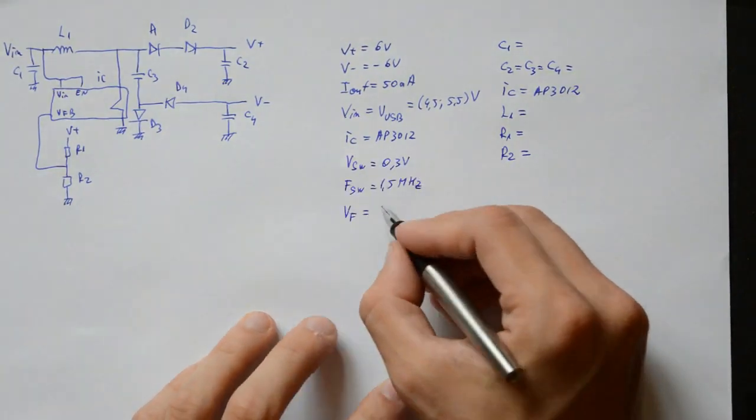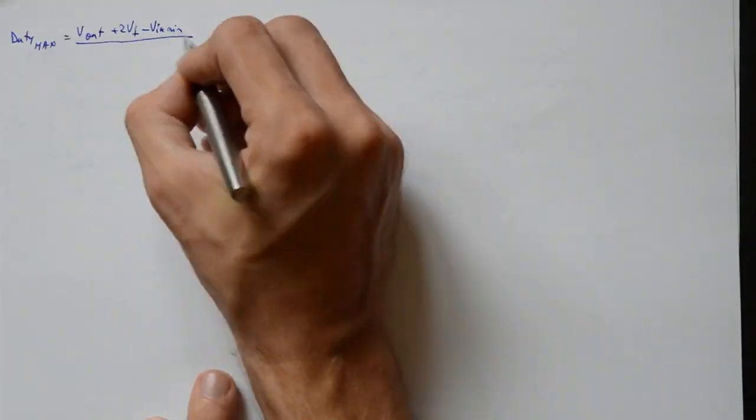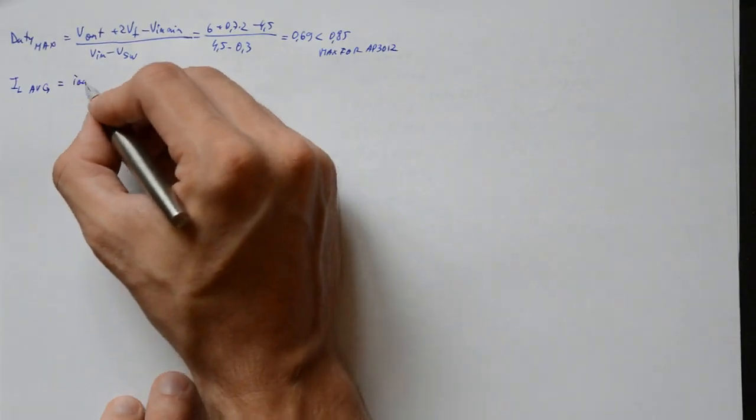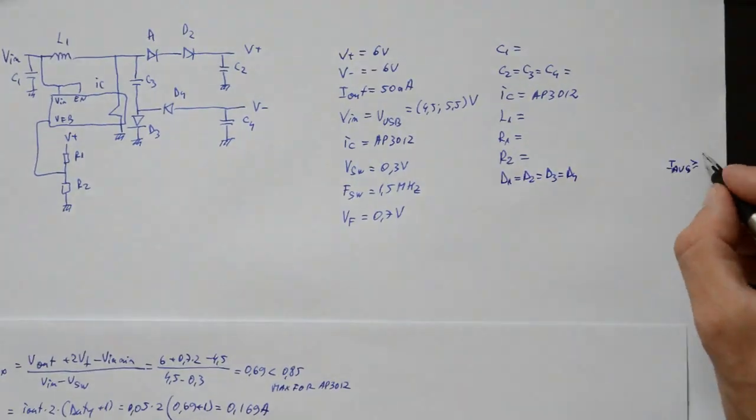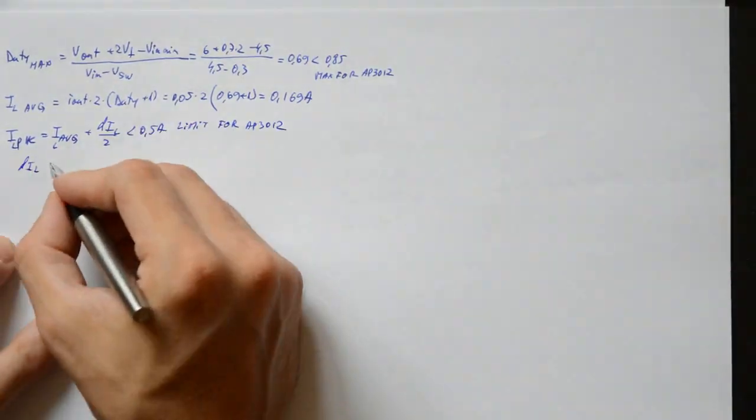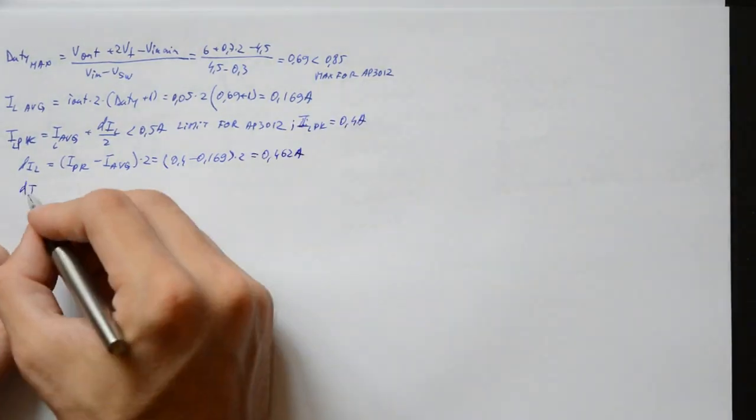From this information, we can slowly calculate the major parameters of the supply. The duty cycle, average inductor current, the diodes, peak inductor current and inductor value.